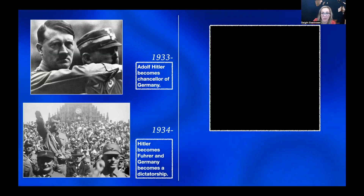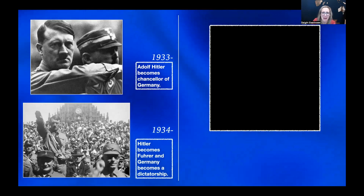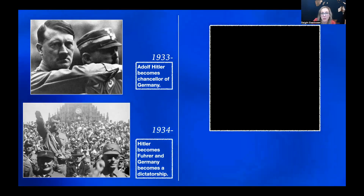Adolf Hitler became chancellor of Germany in 1933 and wrongly blamed the Jews for Germany's defeat in World War I, as well as the economic crisis that followed. Hitler was convinced that getting rid of the Jews would help make Germany powerful again. There were no facts to support his claim. Hitler's ideals of an Aryan race ran quickly through Germany. In May 1933, groups of college students throughout Germany led a series of book burnings. The books that were burned were considered to have un-German spirit.